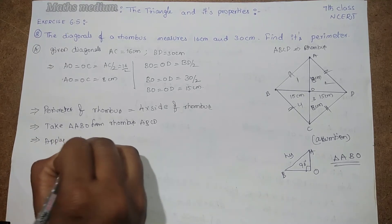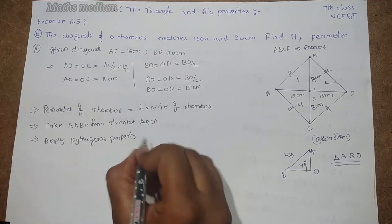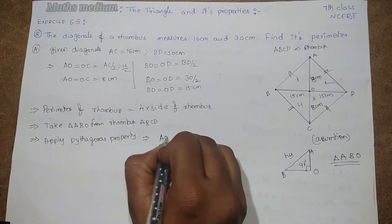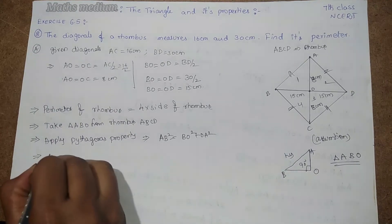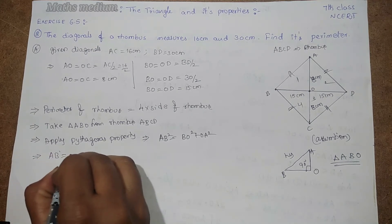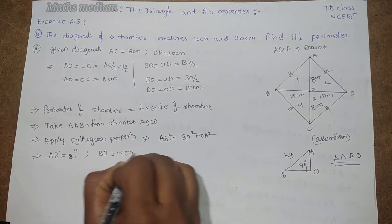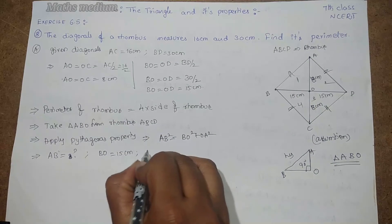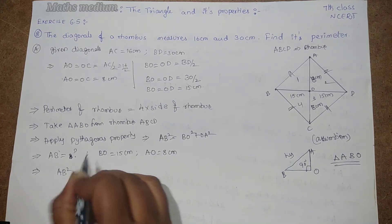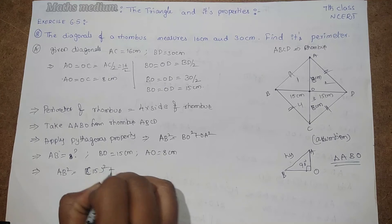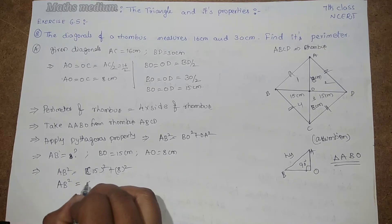Hypotenuse square AB² equals BO² plus OA². AB we don't know. BO we know is 15 cm. AO is 8 cm. By using this, AB² equals 15² plus 8².